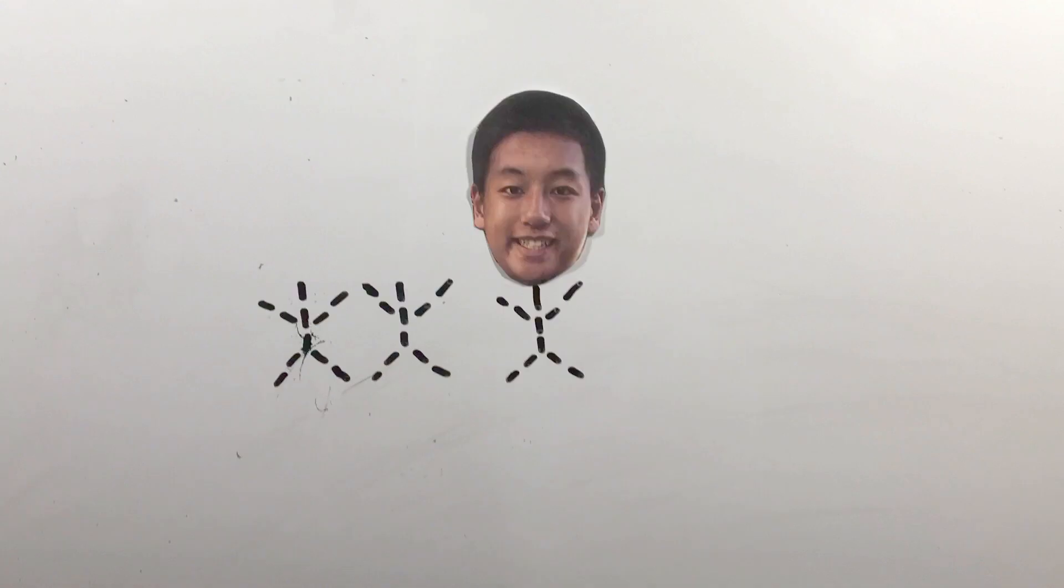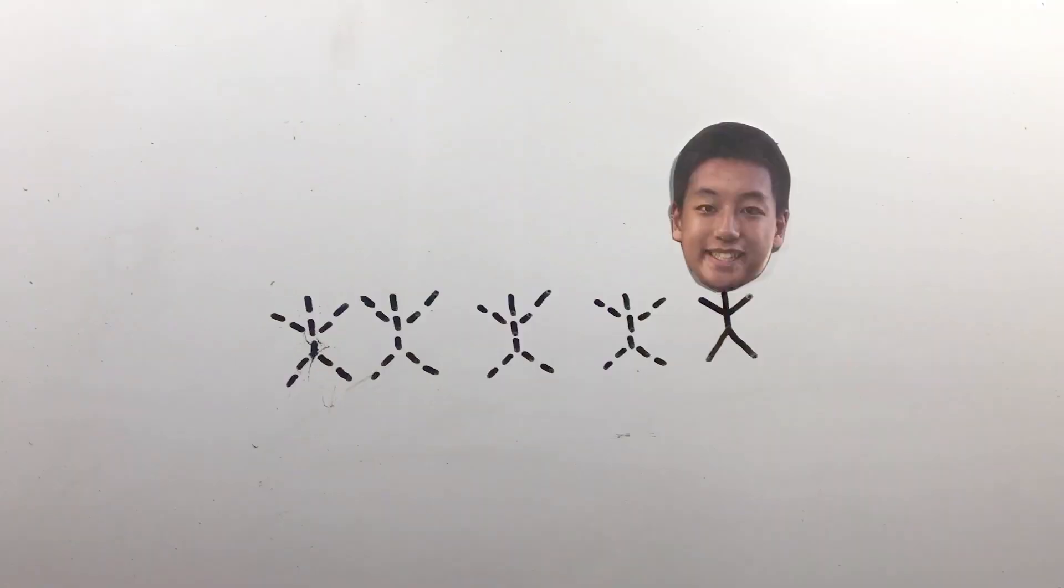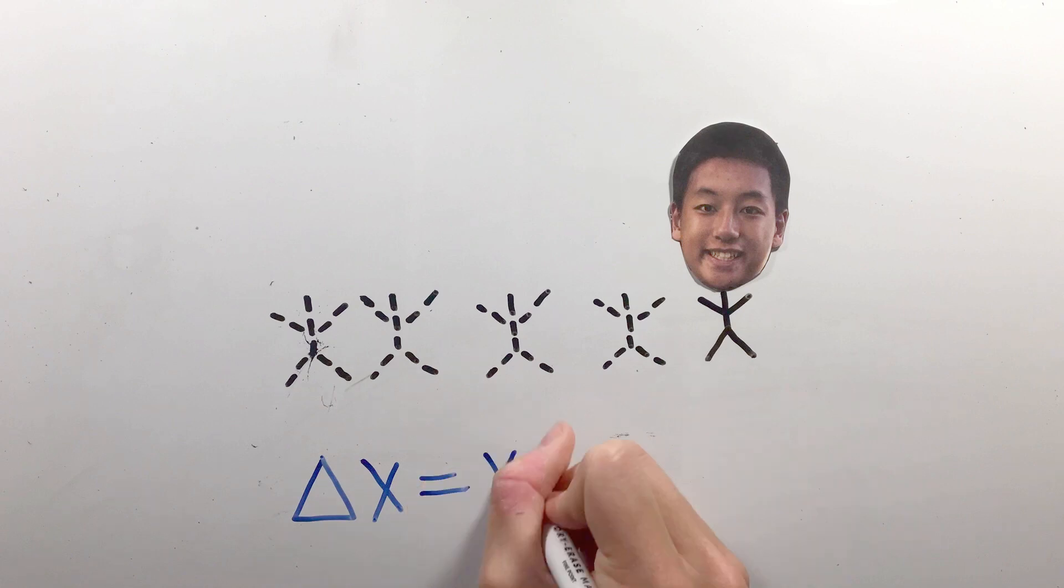But objects don't stay still, they move, making their positions change, and we can measure the change in position either through displacement or distance, both of which can be symbolized by the symbol delta x, or the final position minus the initial position.